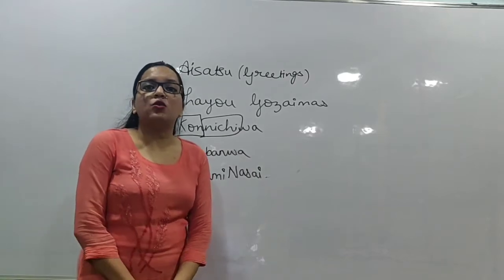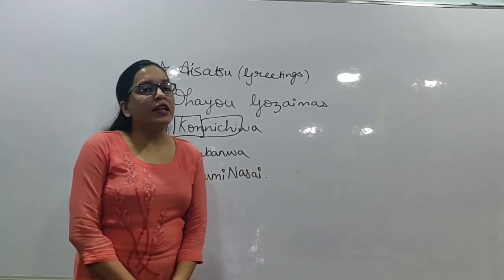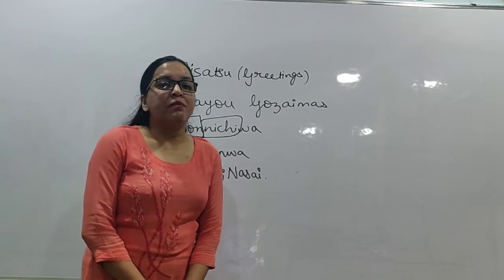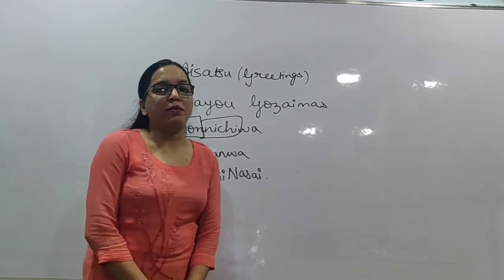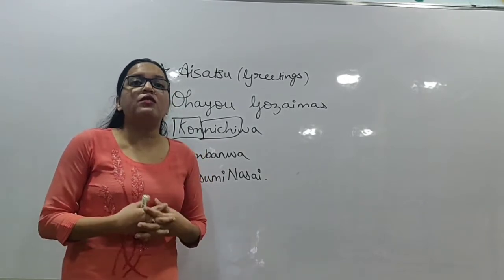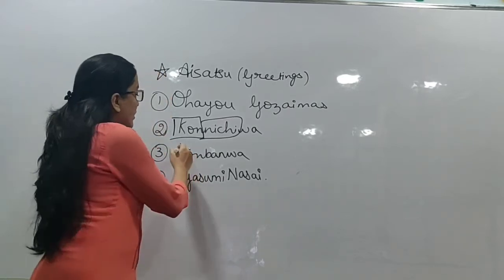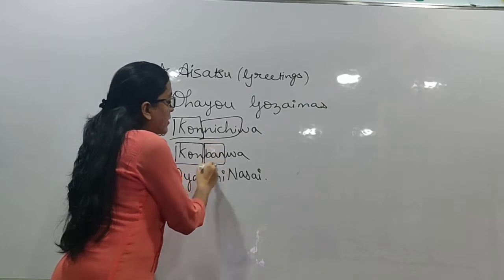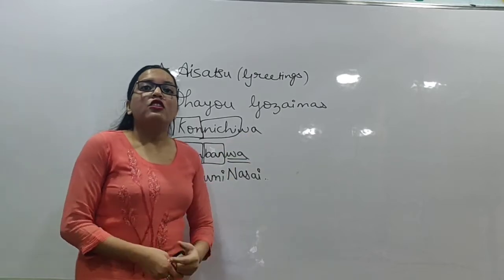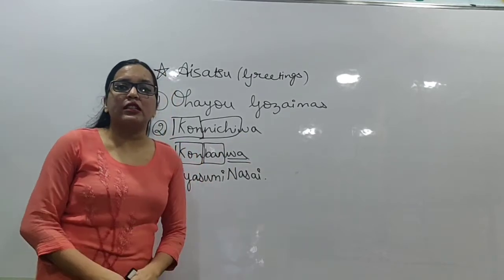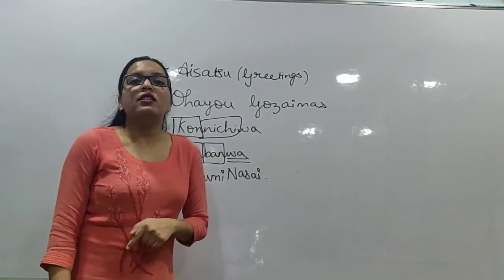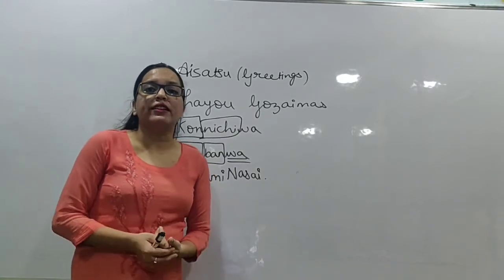The third greeting is 'Konbanwa,' which means good evening. Konbanwa doesn't have a formal or informal distinction — you can use it in any situation. Konbanwa also has three words: 'Kon' meaning 'this,' 'Ban' meaning 'evening,' and 'wa' again. So 'this evening' becomes Konbanwa — a greeting meaning good evening.